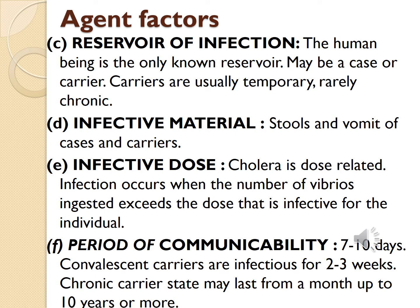Regarding the period of communicability, a case of cholera is infectious for a period of seven to ten days. Convalescent carriers are infectious for two to three weeks, and the chronic carrier state may last from one month up to 10 years or more.